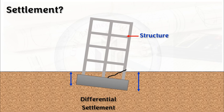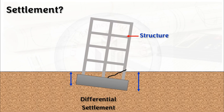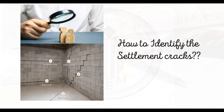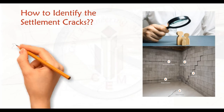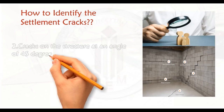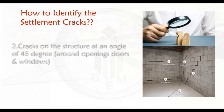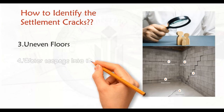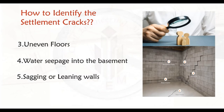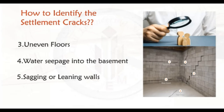Unlike equal settlement, differential settlement causes severe structural damage, so it needs to be addressed properly. To identify settlement cracks, look for: cracks in the foundation walls or floors, cracks on the structure at an angle of 45 degrees around openings like doors and windows, uneven floors, water seepage into the basement, and sagging or leaning walls. Once identified, we can start remedies to rectify these settlement cracks.